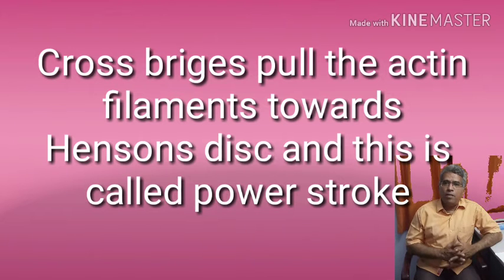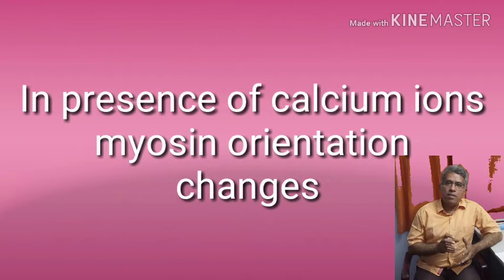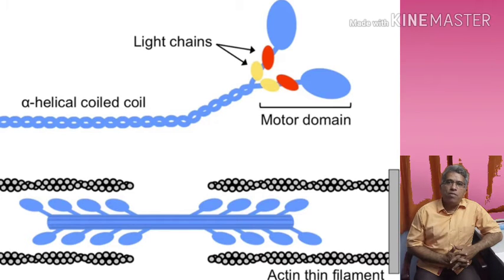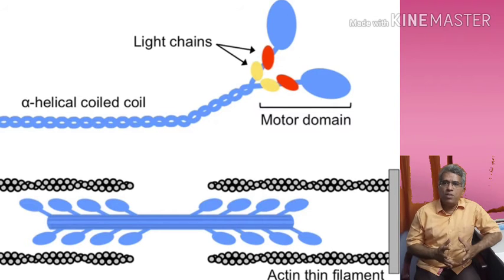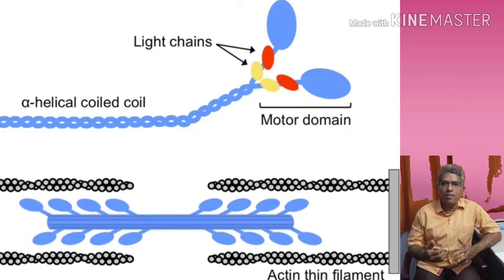When calcium ions are released, the orientation of myosin changes — the inactive myosin becomes active in the presence of calcium ions. It first binds to the actin filament, and then inorganic phosphate is released, forming the cross bridge. The myosin filaments drag the actin filaments attached to the Z line vigorously towards Hansen's disk, and this is called the power stroke.